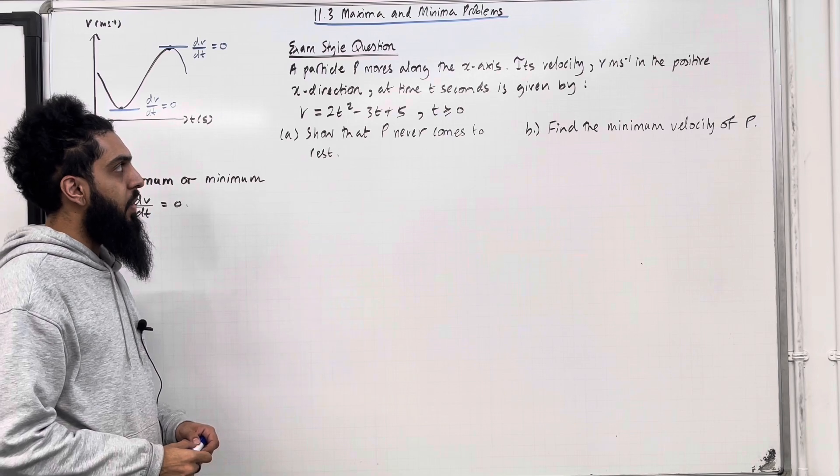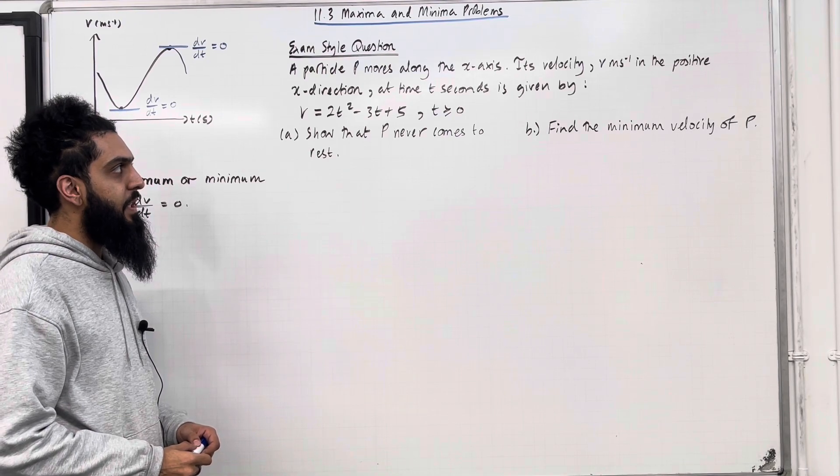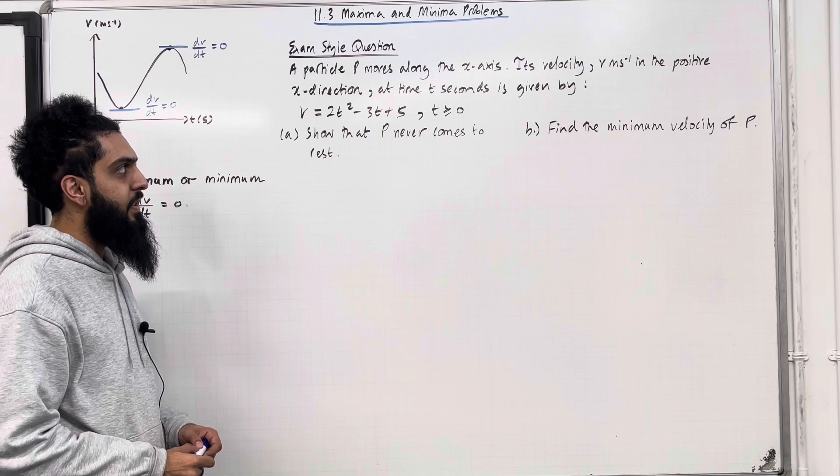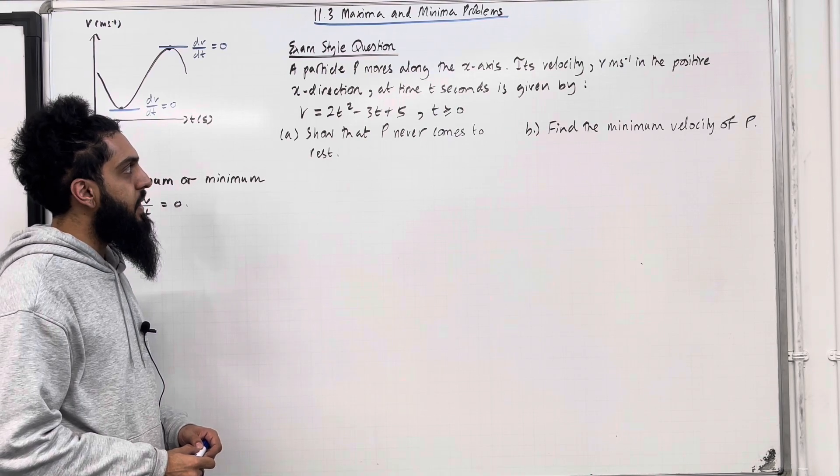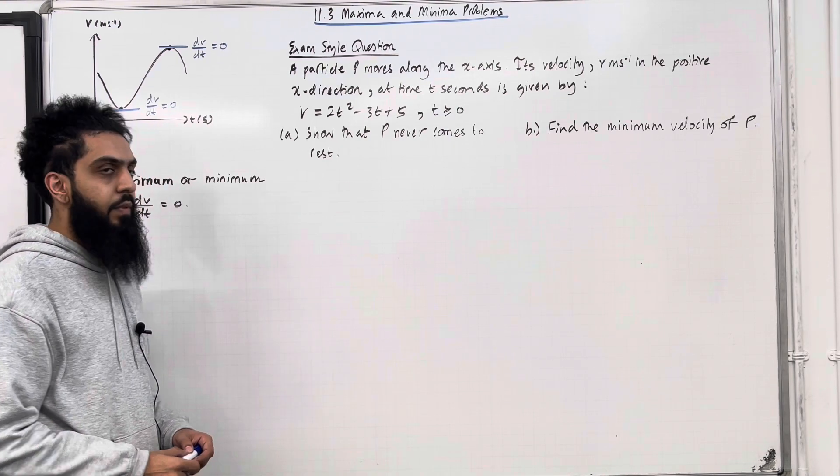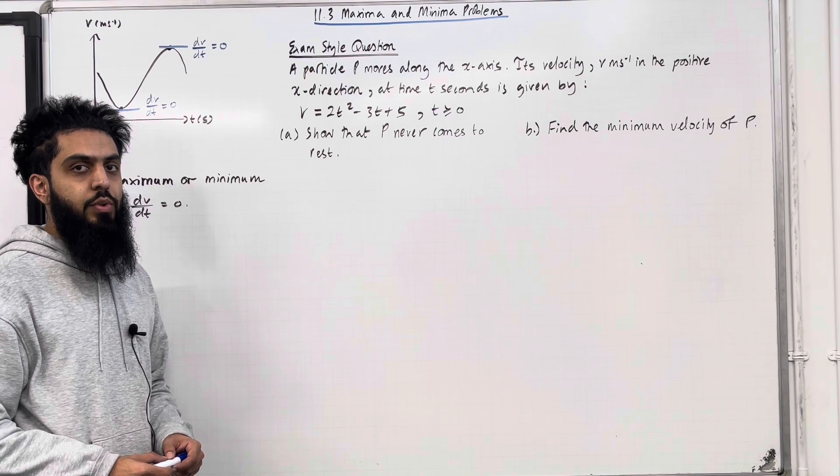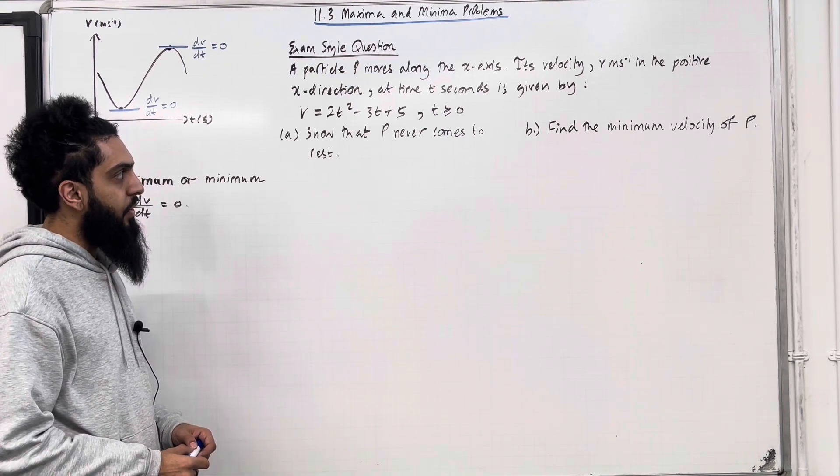A particle p moves along the x-axis. Its velocity v metres per second in the positive x direction at time t seconds is given by v = 2t² - 3t + 5, for t ≥ 0. Part A: show that p never comes to rest.